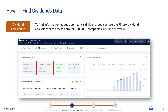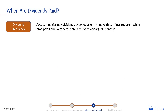Most companies pay dividends every quarter, in line with earnings reports, while some pay it annually, semi-annually, twice a year, or monthly. You can learn more about the dividend frequency in the previous lesson of the course.